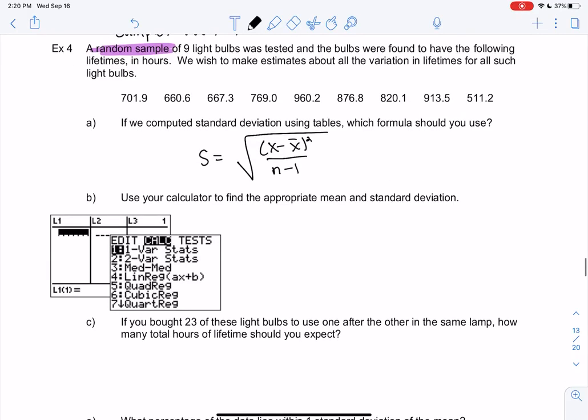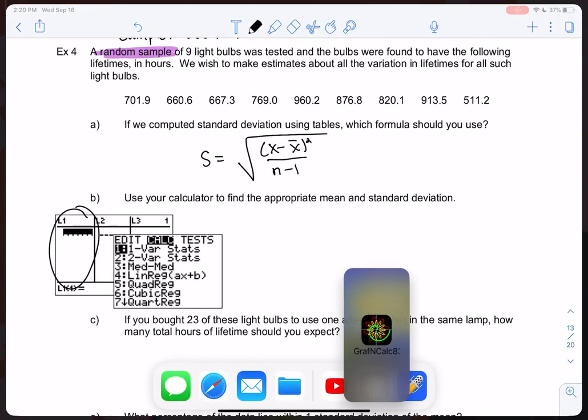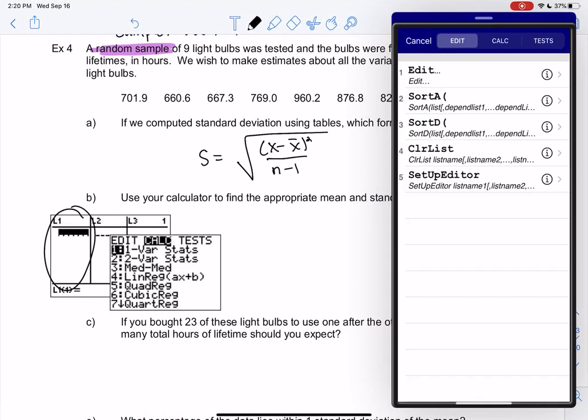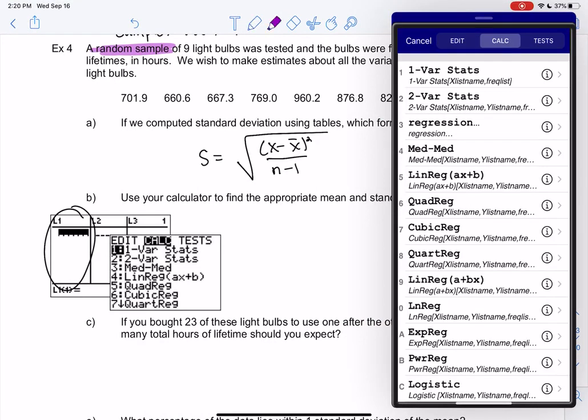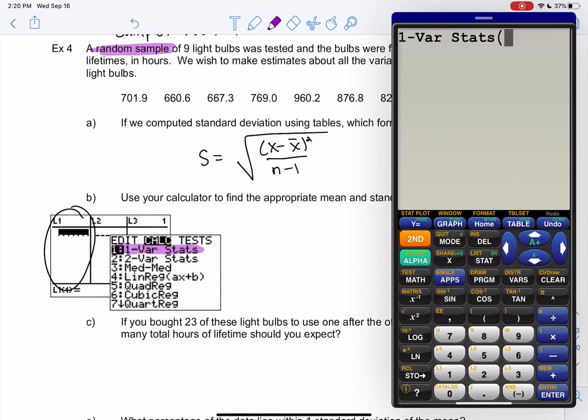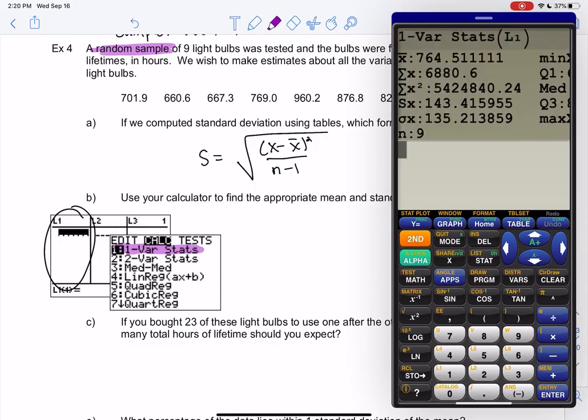So we're going to go to one-var stat in the calculator. We put the data into L1 already, so go to stat calc, we're going to go down to one-var stat, and you're going to type L1, enter, and it'll tell us the mean and standard deviation.